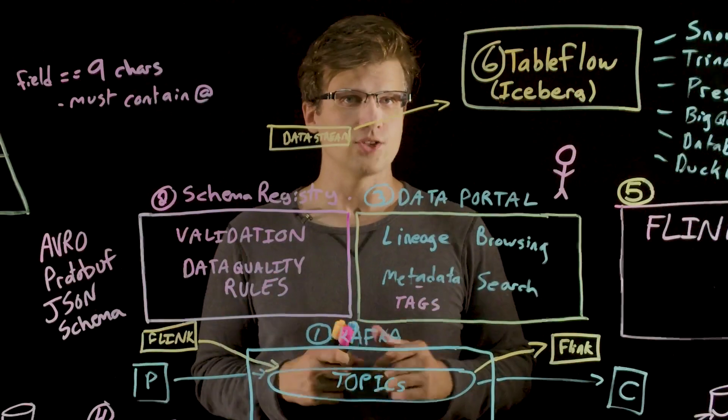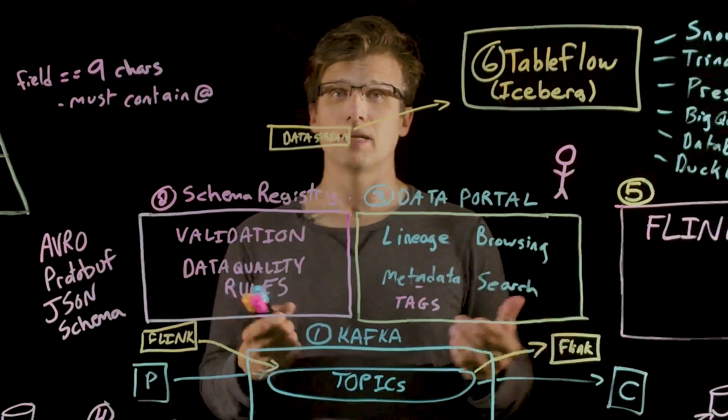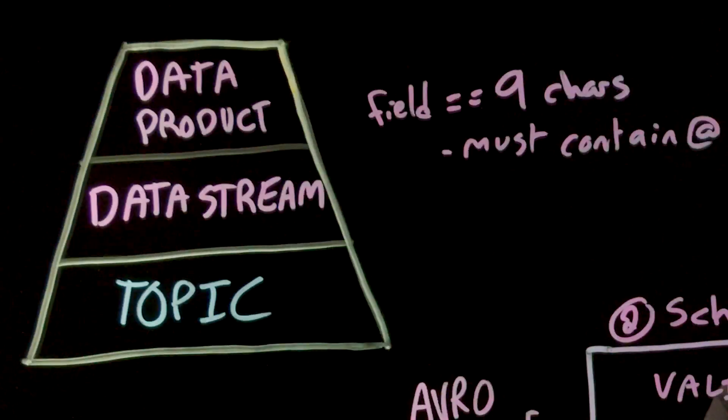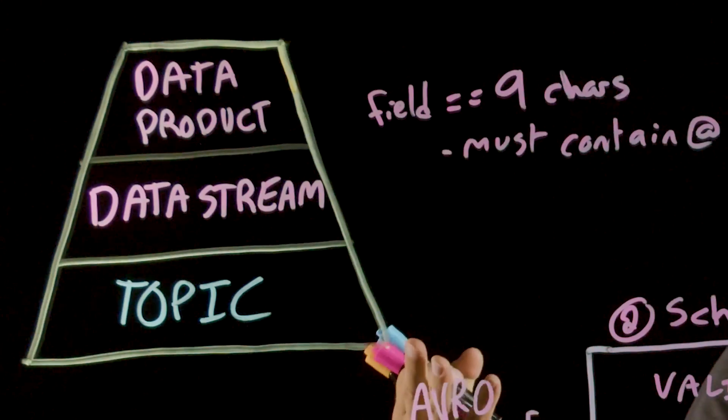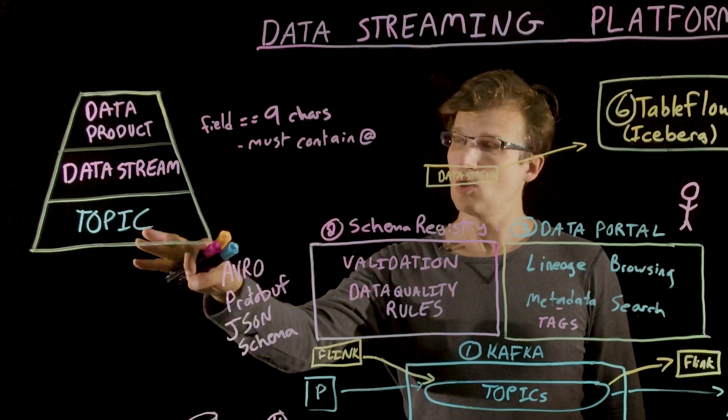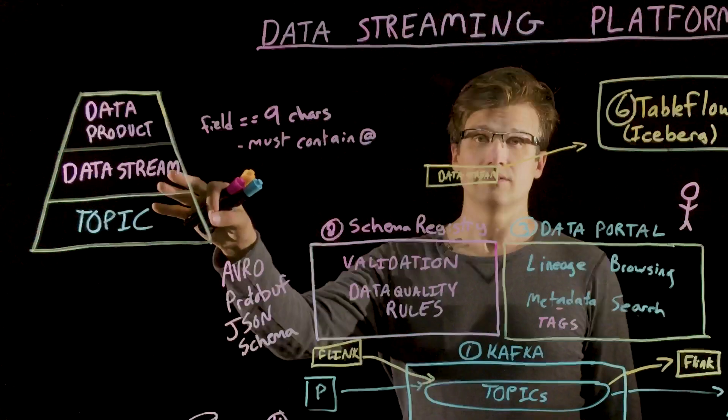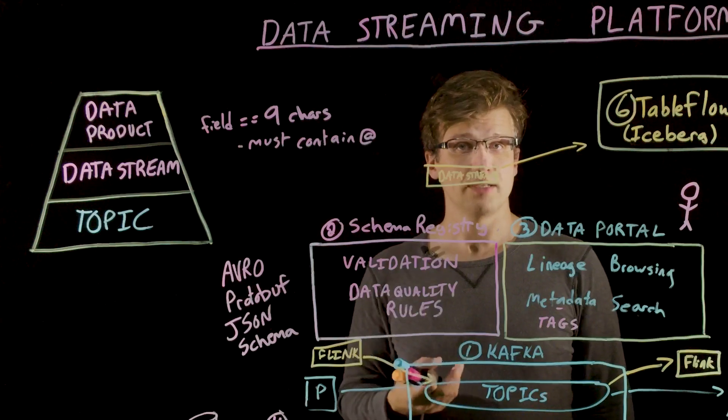A data streaming platform provides you with a lot of powerful options, based on the natural evolution of data streaming over the years. At the very bottom of the streaming pyramid, you have our basic topic. Bytes in, bytes out. Adding schemas and data quality promotes these basic topics into well-defined data streams, reducing errors and significantly increasing reusability.